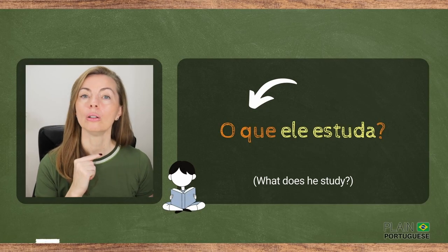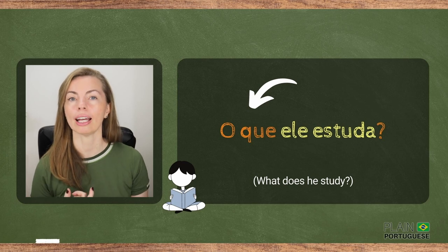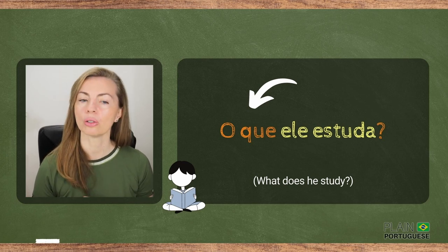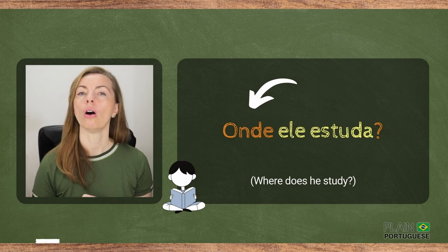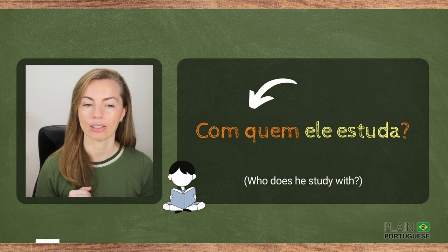Now, if you want to ask a direct question with what, where, how often — any question words — you must place the question word at the beginning of your question, and of course use the proper punctuation mark. For example: O que ele estuda? O que is at the beginning. Onde ele estuda? Com quem ele estuda?